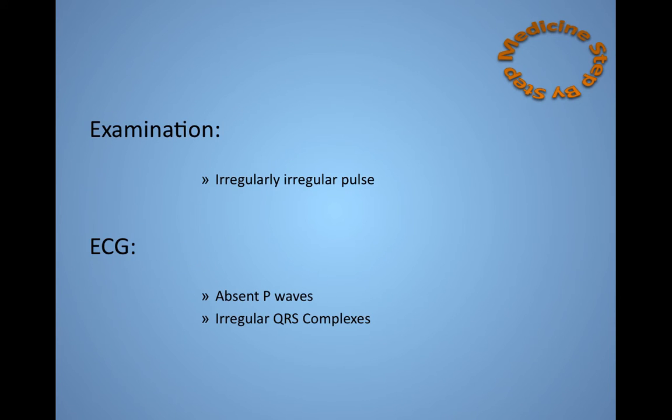On examination, you will note an irregularly irregular pulse, and then on ECG, you will see that there are no P-waves, and the QRS complexes are irregular.